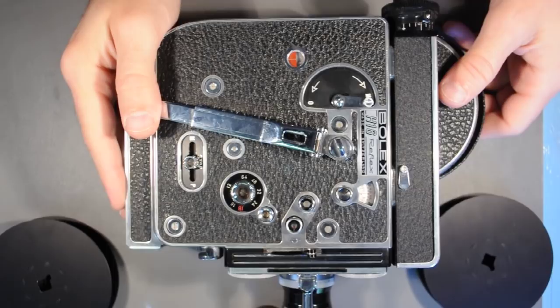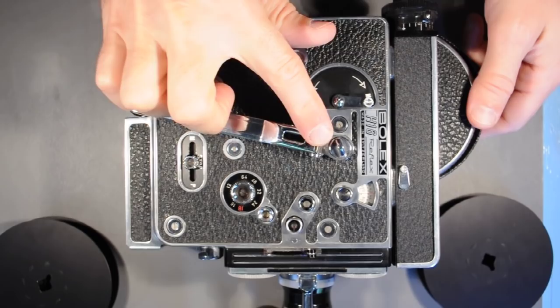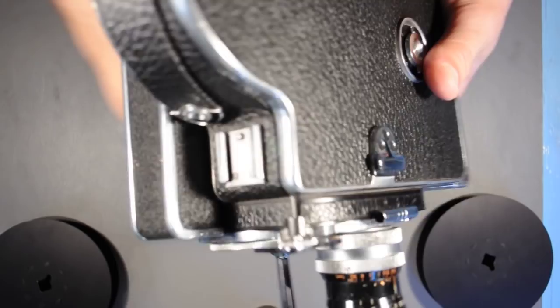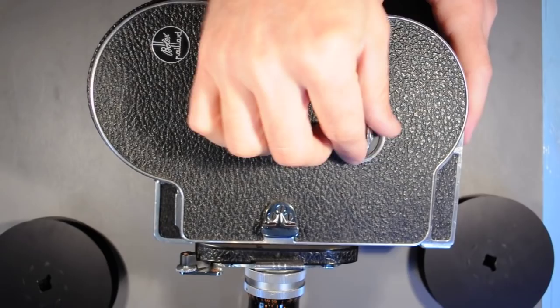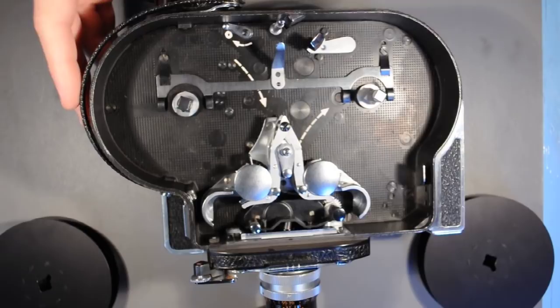Here's a demonstration video on loading a Bolex H16 camera. To get started, you want to make sure your motor is fully wound. Mine is, so I'm not going to do that step. Let's flip the camera over to where the film compartment is, open the door, pop it off, and here we can see the insides of the Bolex.